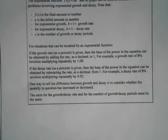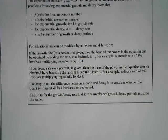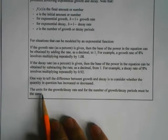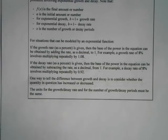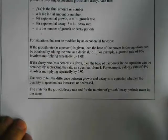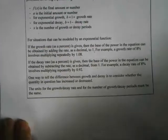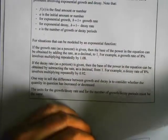One way to tell the difference between growth and decay is to consider whether the quantity is increasing or decreasing. People sometimes make the mistake of giving a growing quantity a base less than 1, which would make it decay. Also very important: the units for the growth/decay rate and the number of growth or decay periods must be the same — this is an extremely common mistake. If they're not the same, you'll have to convert one into the other units.